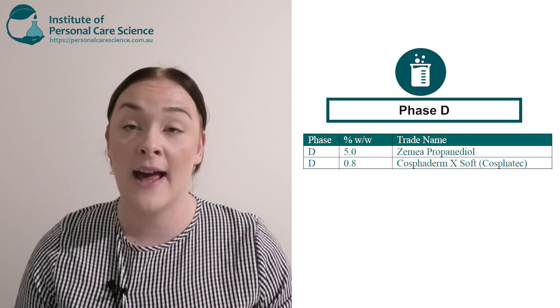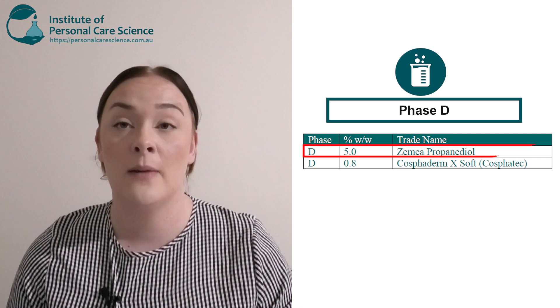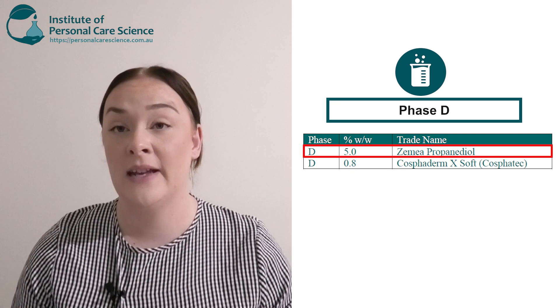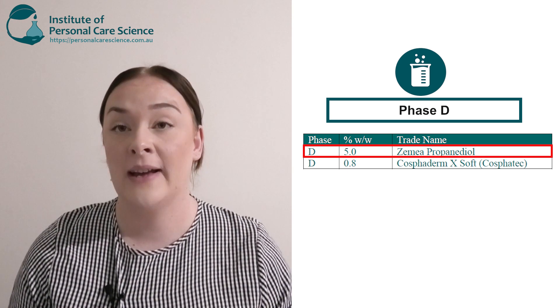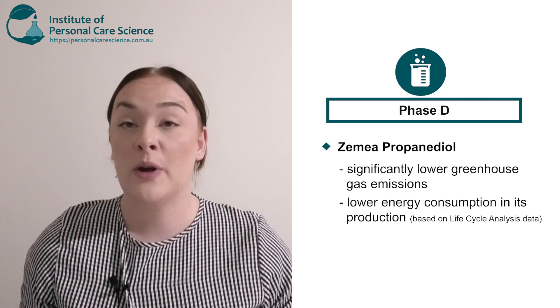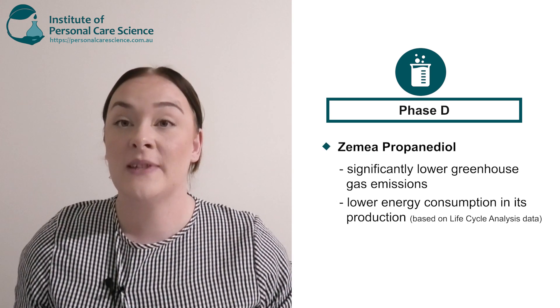Now, sulfate-free products can be hard to thicken, so I'm going to add a gum. I've chosen to first go with some propanediol to slurry my gum. I've chosen the propanediol from Zemea.